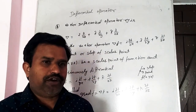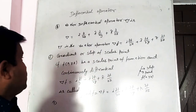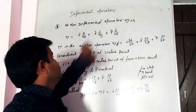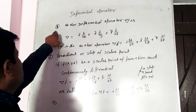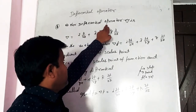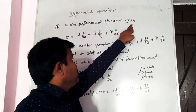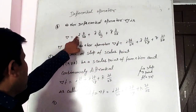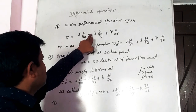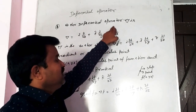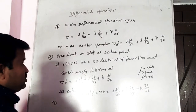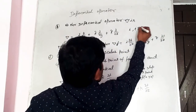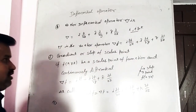Hello students. Dr. Anil Kumar will explain the Differential Operator. First, the vector differential operator del is represented as del = i ∂/∂x + j ∂/∂y + k ∂/∂z, where i, j, and k are unit vectors.